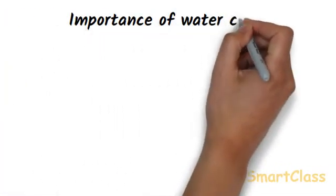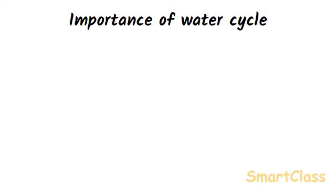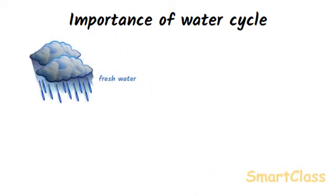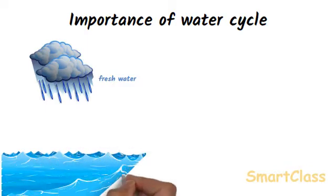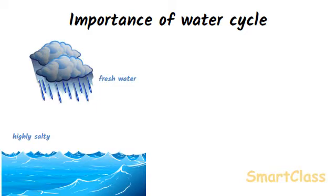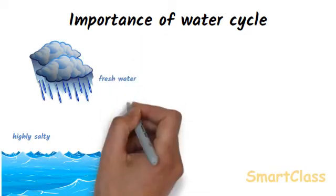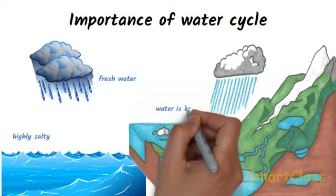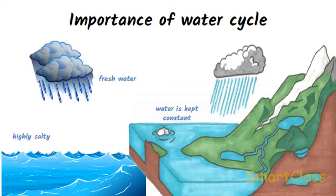Importance of water cycle in nature: water cycle is important for the following main reasons. Water cycle makes fresh water available in the form of rain. Sea water is highly salty and not fit for drinking by animals or for the growth of plants, but rain water is pure and can be utilized by animals as well as plants. Water cycle also keeps the amount of water on the earth's surface constant, because the water removed during evaporation and transpiration is put back to the earth through rain and snow.